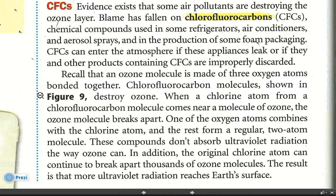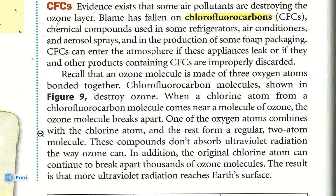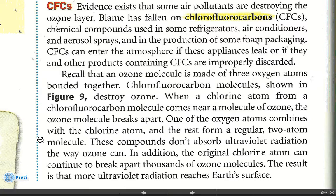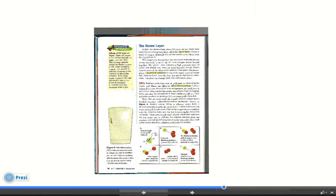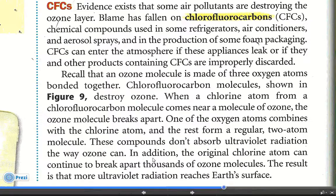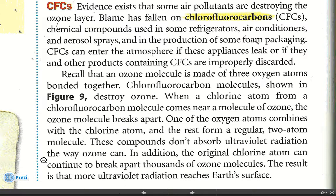Chlorofluorocarbon molecules destroy ozone. When a chlorine atom from a CFC molecule comes near a molecule of ozone, the ozone molecule breaks apart. One of the oxygen atoms combines with the chlorine atom, and the rest form a regular two-atom molecule. These compounds don't absorb ultraviolet radiation the way ozone can. In addition, the original chlorine atom can continue to break apart thousands of ozone molecules. The result is that more ultraviolet radiation reaches Earth's surface.